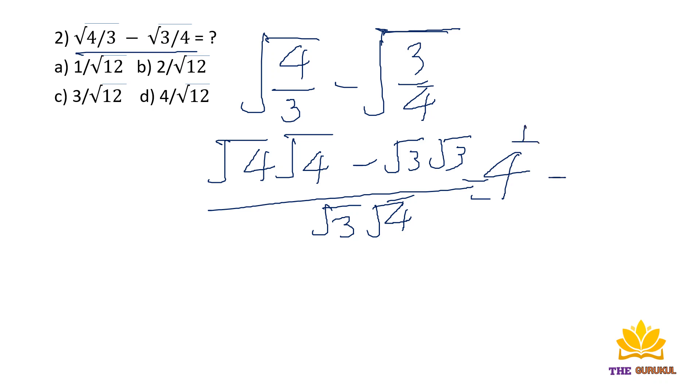And 3 to the power 1 by 2 times 3 to the power 1 by 2 means 3 to the power 1. We use the same rule: a to the power m times a to the power n equals a raised to m plus n. So m equals 1 by 2 and n equals 1 by 2.